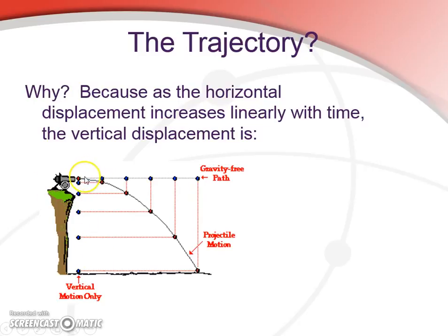And, of course, we can add those two things together, and the x and the y motion added together gives us our characteristic parabola projectile motion.